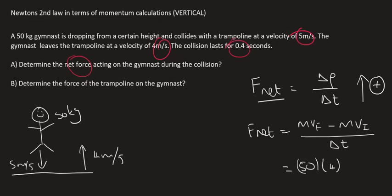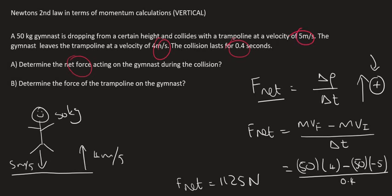Why? Because it's going up and we chose up as positive. Then minus 50. Now the initial velocity is 5, but going downwards, so you put a negative 5 there. And the time is 0.4 seconds. You can type all of that on the calculator, and your F_net equals 1,125 newtons.